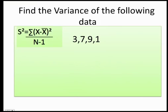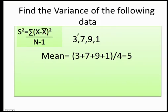Now let's do the variance. Again, first step, find the mean. I go 3 plus 7 plus 9 plus 1 equals what? 3 plus 7 is 10. 10 plus 9 is 19. 19 plus 1 is 20. 20 divided by 4 equals 5. I got my x̄.